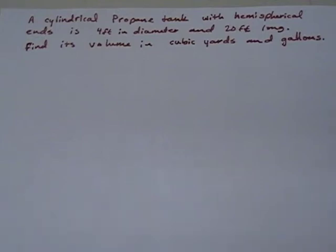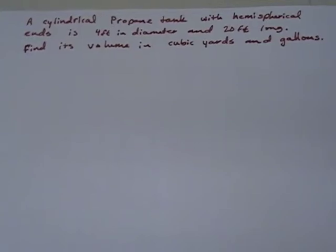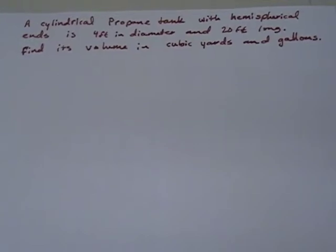Hello and welcome back. Today we're going to be doing applications of geometry with unit conversion. So we've been asked, we've been told a cylindrical propane tank with hemispherical ends is 4 feet in diameter and 20 feet long. Find its volume in cubic yards and in gallons.